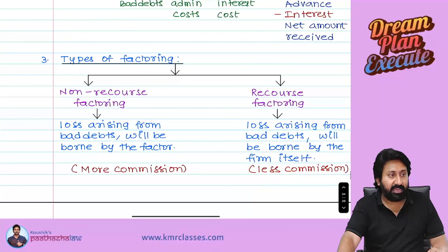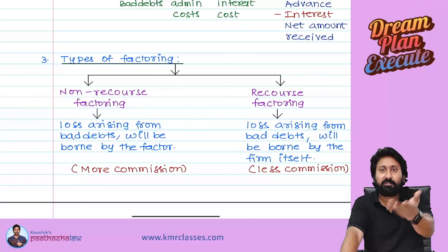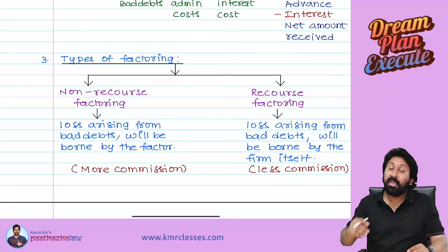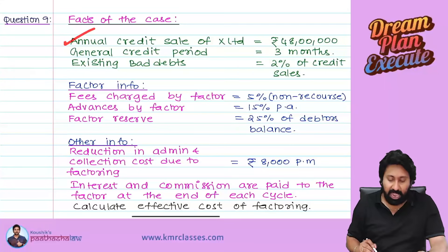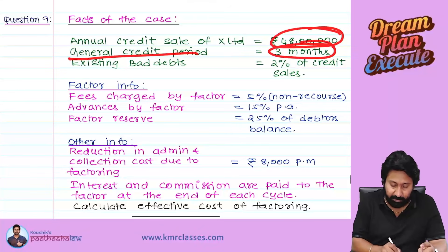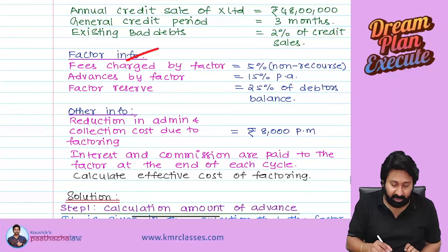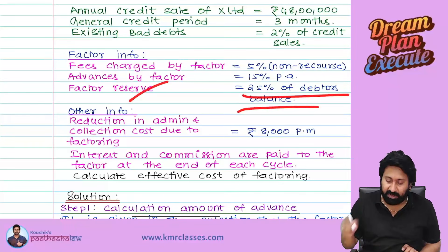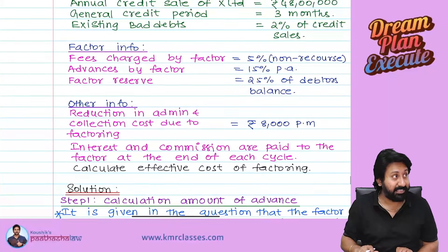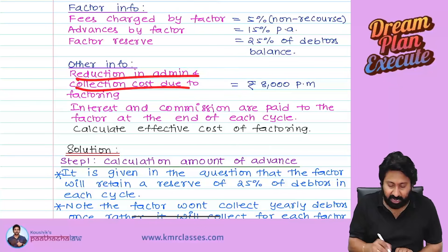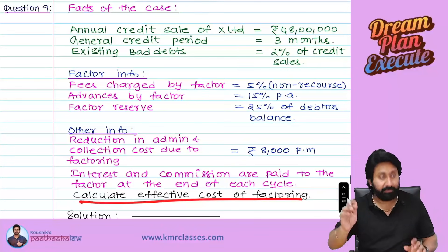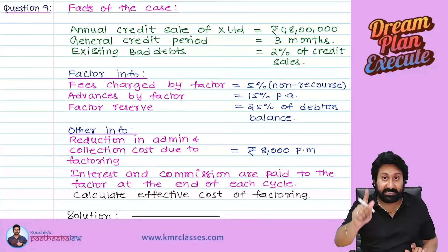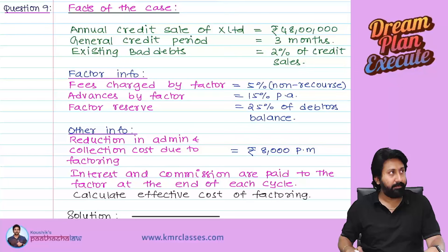The entire factoring concept is covered in about eight and a half minutes. Now let's solve an 8-mark exam question. Given: Annual credit sale = 48 lakh; credit period = 3 months; existing bad debt = 2% of credit sales; factor fee = 5%; advance interest rate charged by factor = 15%; factor reserve = 25% of debtors; reduction in admin/collection cost due to factoring = given. Interest and commission paid at end of each cycle. Calculate effective cost of factoring.